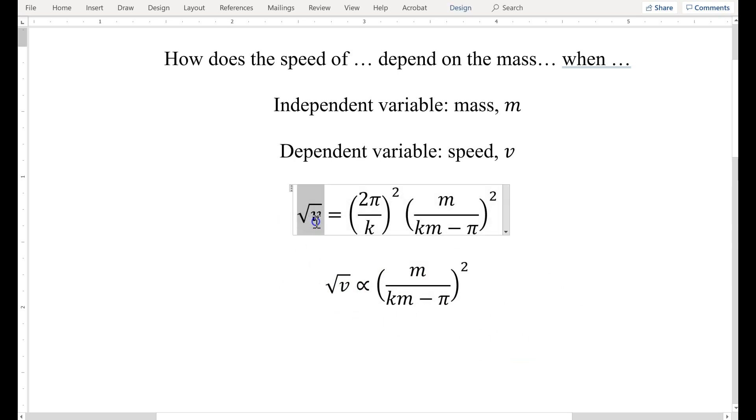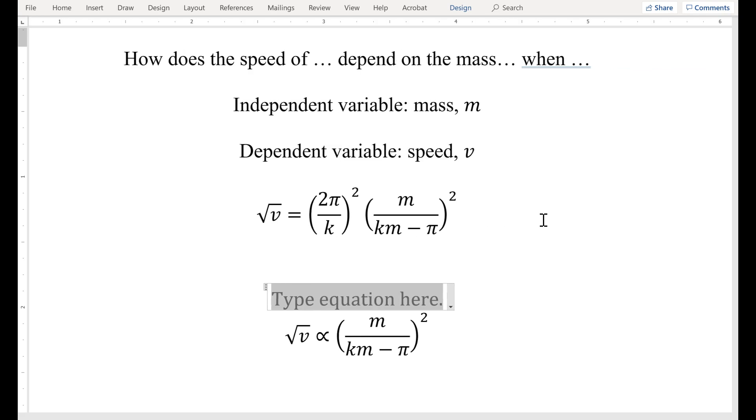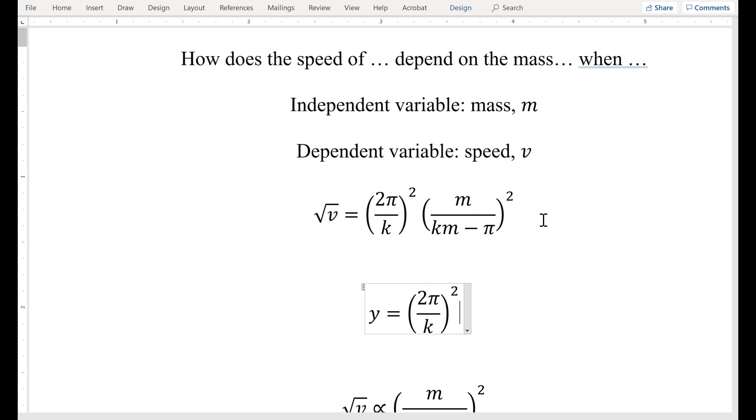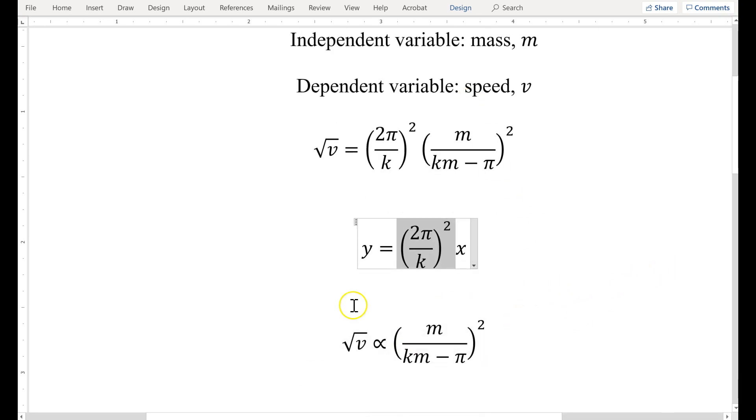If you put this on the y axis, if you make that your y and you make this your x, then now what you'll have is you'll have y is equal to this times x, and so this whole mess right here should be the slope of the graph, where y axis is radical v, x axis is this whole mess.